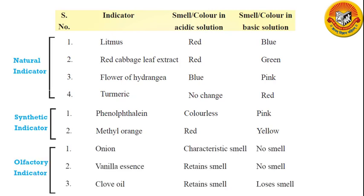Now let us see the olfactory indicators. First, onion — onion has a characteristic smell. When we put onion in acidic solution, its characteristic smell does not change; we get the characteristic smell. But when we put onion in a basic solution, its characteristic smell vanishes — we do not get any smell.